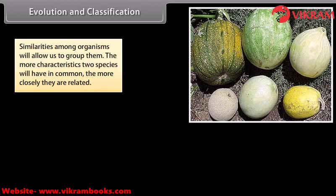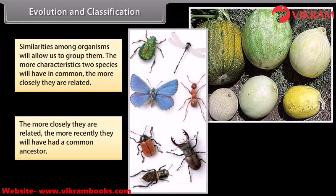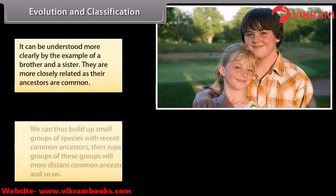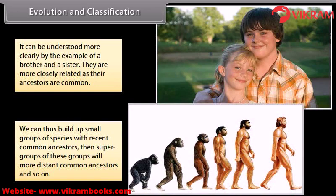Similarities among organisms allow us to group them. The more characteristics two species have in common, the more closely they are related. The more closely they are related, the more recently they will have had a common ancestor — similar to how a brother and sister are closely related because their ancestors are common. We can build small groups of species with recent common ancestors, then supergroups with more distant common ancestors, and so on.